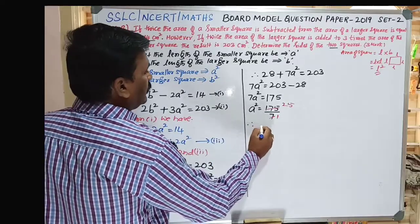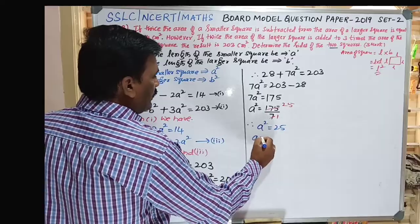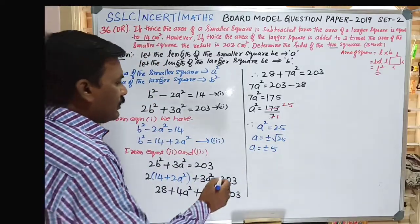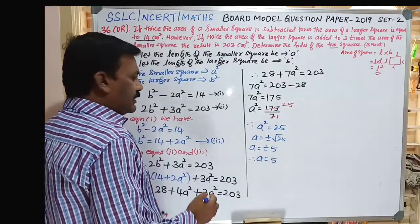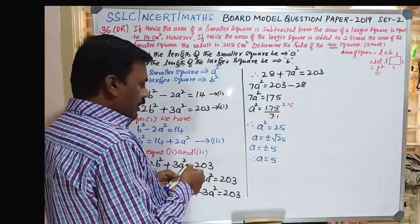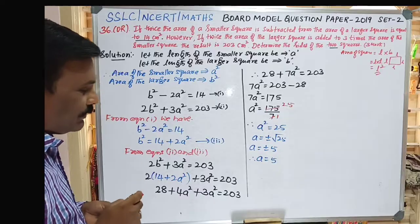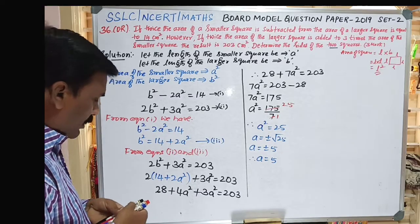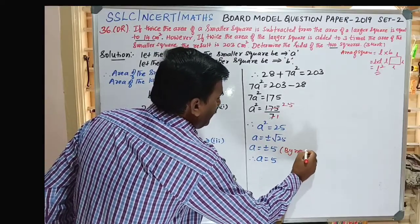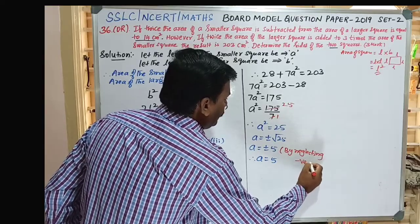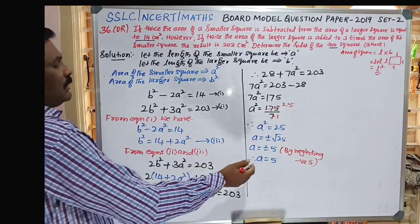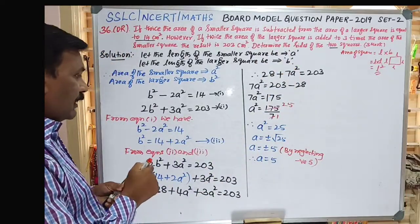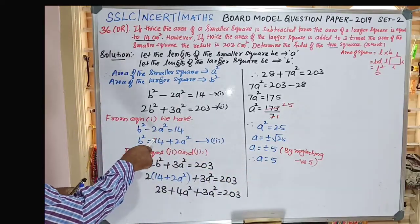Therefore, A = ±√25 = ±5. We neglect the negative value −5 because length is always expressed as a positive quantity. So A = 5. That is, the side length of the smaller square is A = 5 cm. Now we substitute A = 5 into Equation 3.